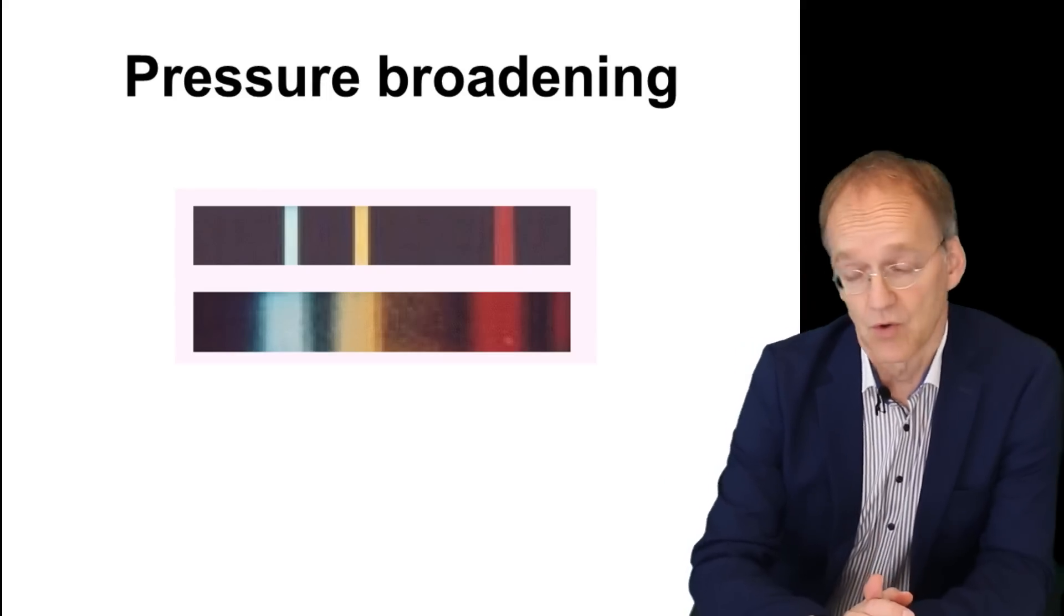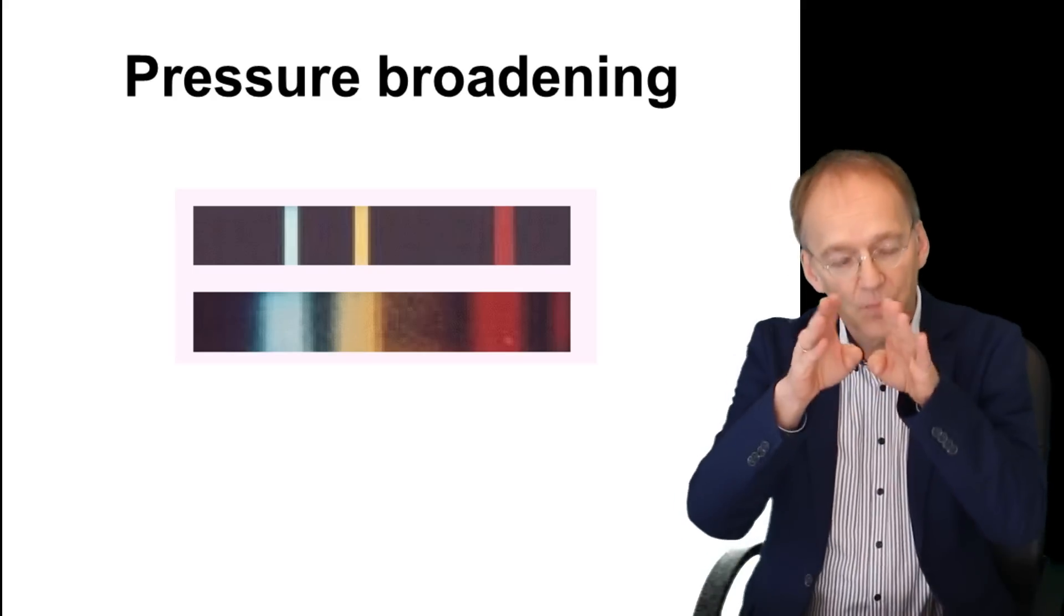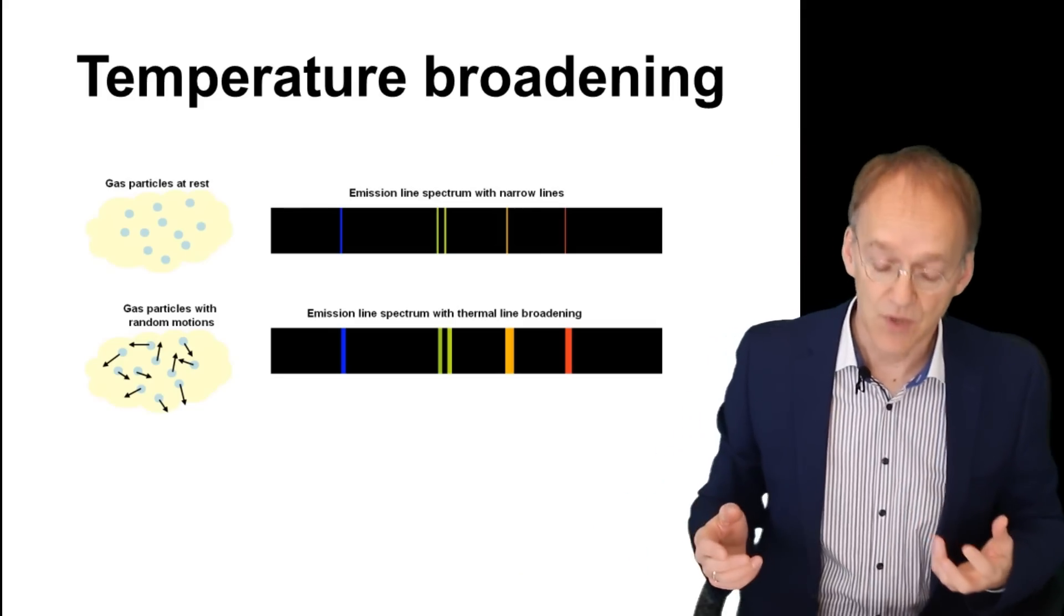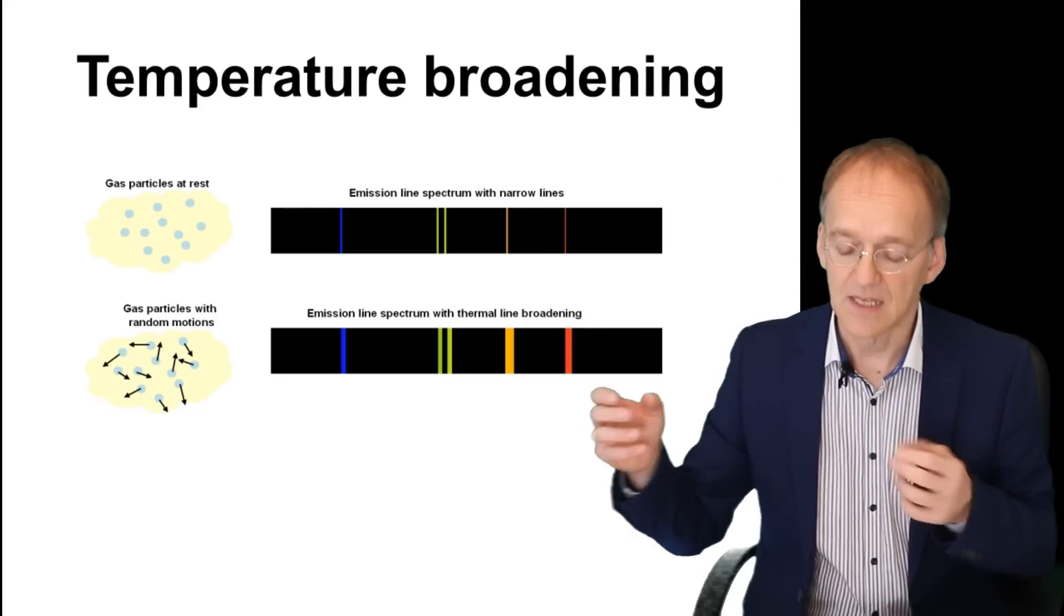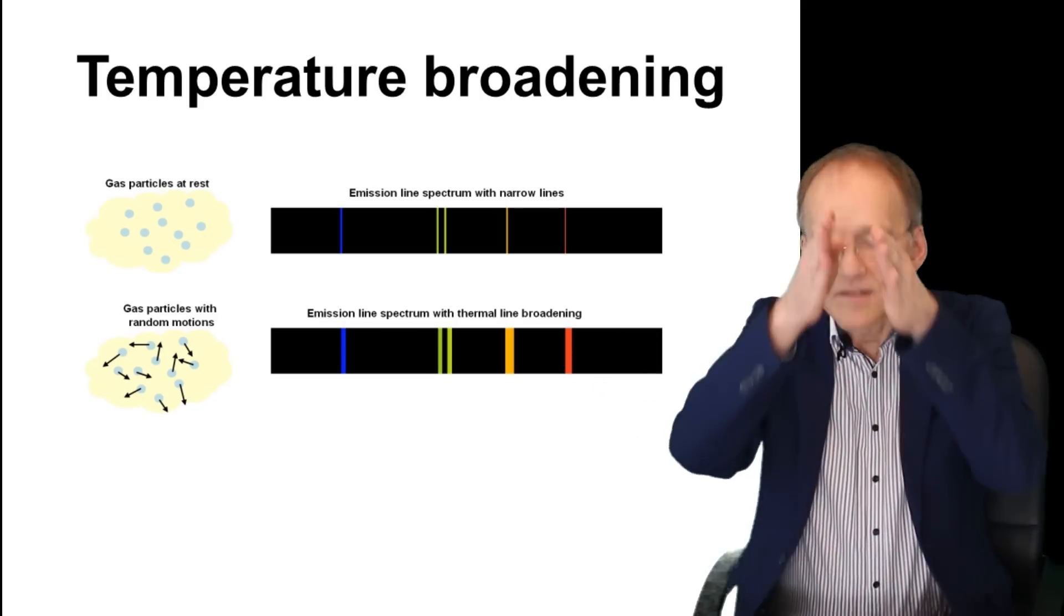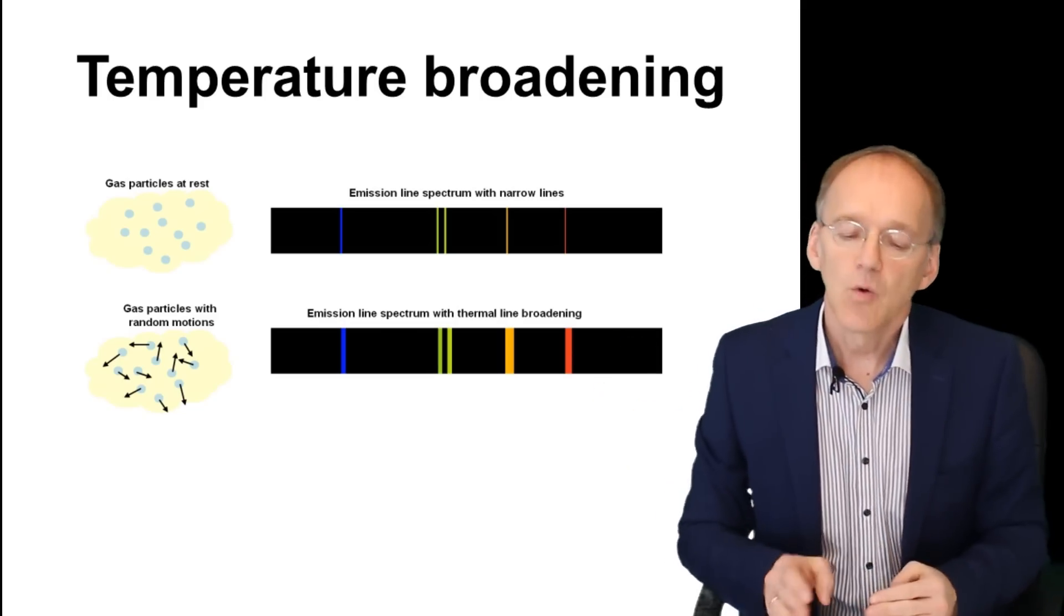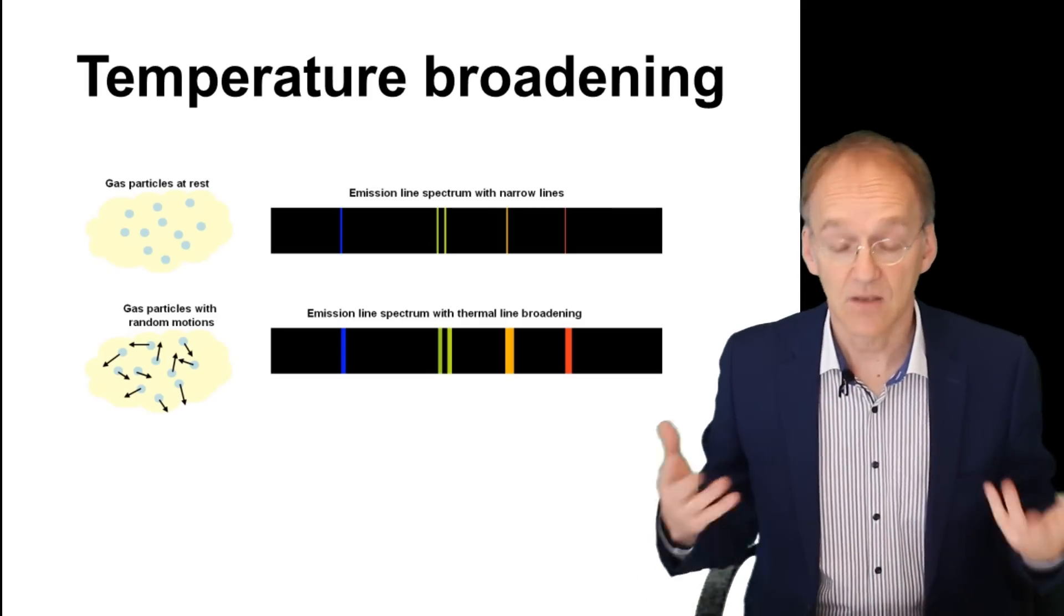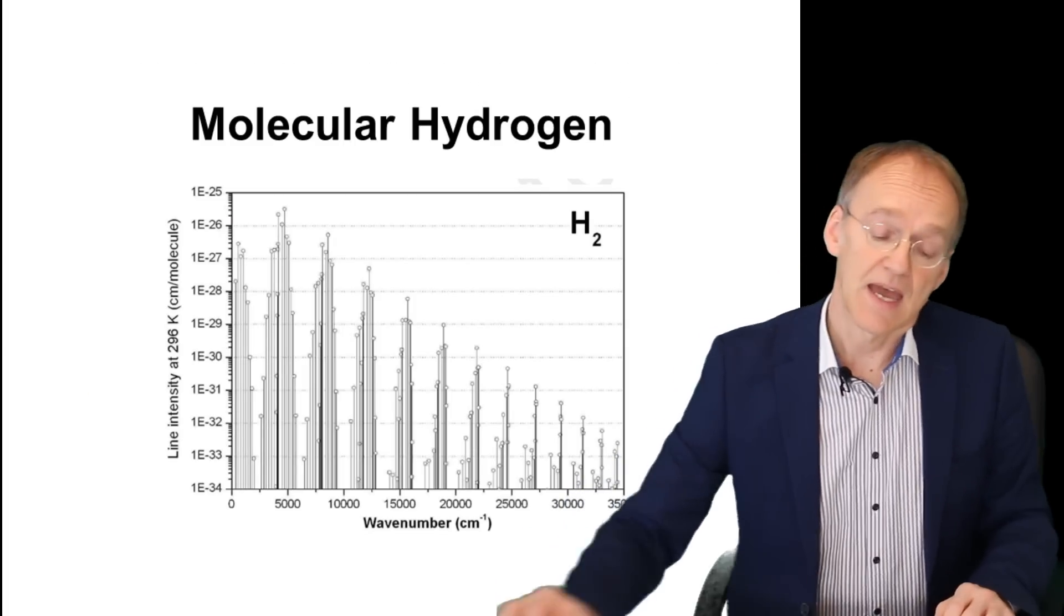Of course you have pressure broadening—that means if you have colliding atoms, that will spoil a little bit the accuracy. Then you have temperature broadening: if the atoms move at a certain velocity, then you have Doppler shifts and this very sharp line becomes a little bit wider. But no way that at the given temperatures you can arrive at the spectrum that is continuous as it is observed in the Sun.